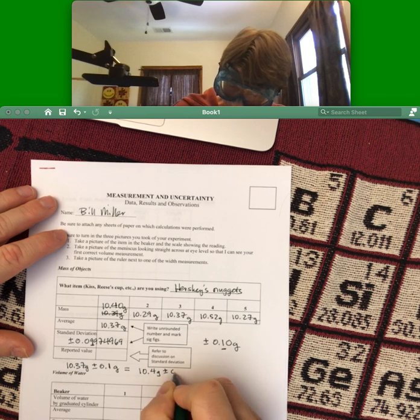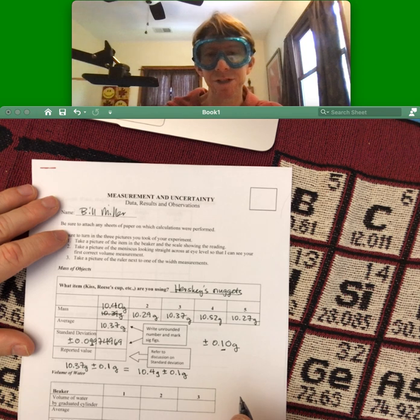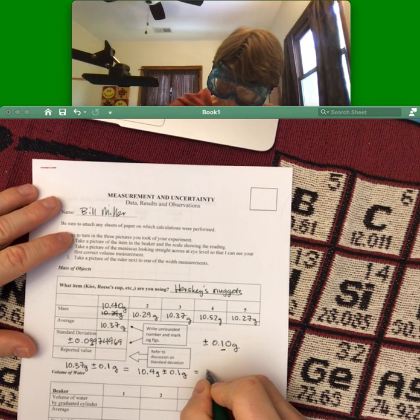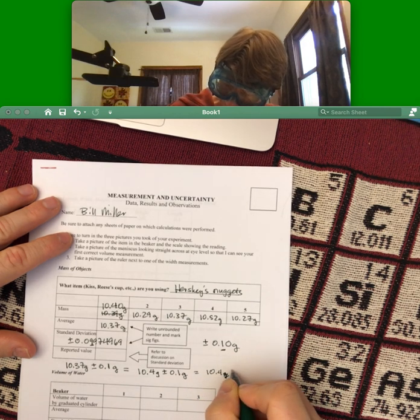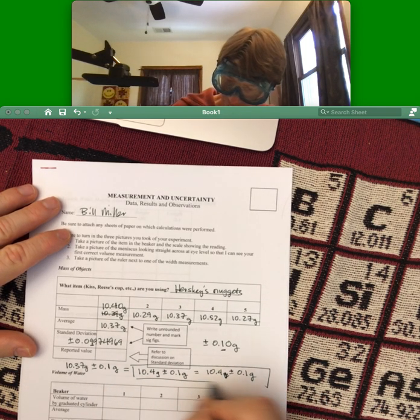Plus or minus 0.1 gram for the average and standard deviation of my nuggets. And I can also write 10.4 grams—oh, I don't need the grams—plus or minus 0.1 gram. Those are either way good ways of reporting this value here.